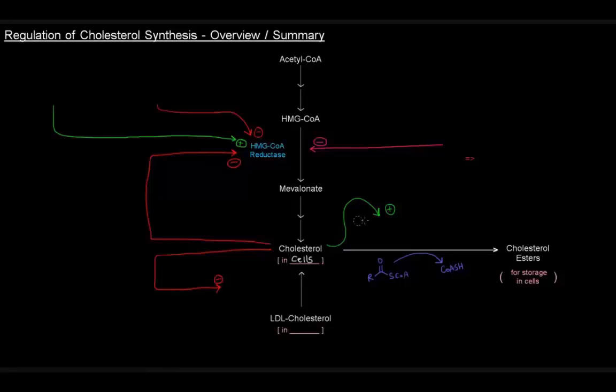This cholesterol in the cells can be converted into cholesterol esters so they can stay and be stored in the cells as done by acyl-CoA cholesterol acyltransferase, or ACAT, which basically just tacks on an acyl group onto the OH of cholesterol to make them into cholesterol esters.